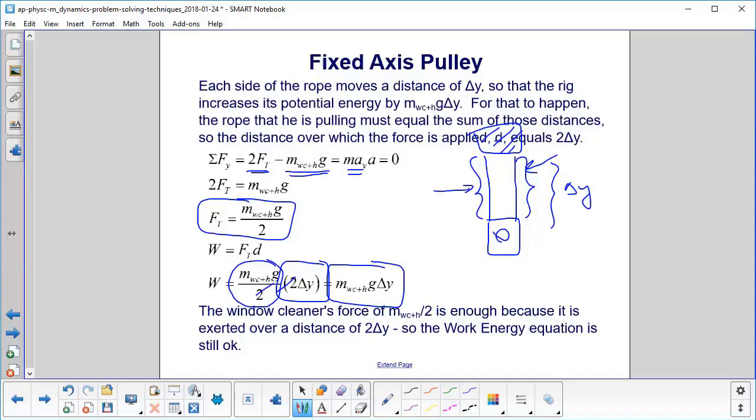Now that we've shown that the reduced force obtained by this arrangement requires that it be exerted over a greater distance, let's move on to another question. The window cleaner pulls down on the rope and along with the harness, he accelerates upward at a rate of 0.330 meters per second squared. What force must he pull with and what is the force that he now exerts on the harness, his normal force?